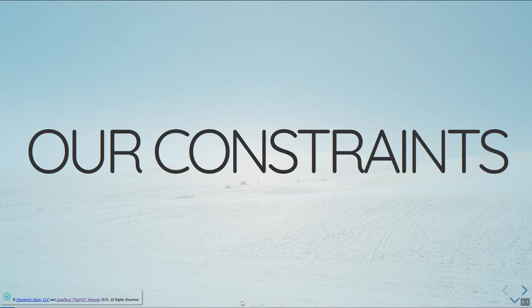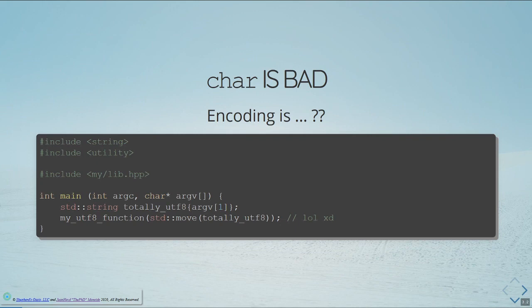First we're going to talk about some constraints. If you watched the previous talks, some of these will be repetitive. Basically, `char` is bad. The first problem with `char` is that it has a fundamental issue with what its encoding is — you don't necessarily know. The minute you interact with the system, the minute you interact with the C API, you don't really know whether you're actually getting proper UTF-8 or some Windows-1252 or some other thing. The real fundamental improvement we want to make is trying to fix this problem of what the encoding of stuff actually is, because right now people don't know and they just make assumptions, and those assumptions break down a lot.